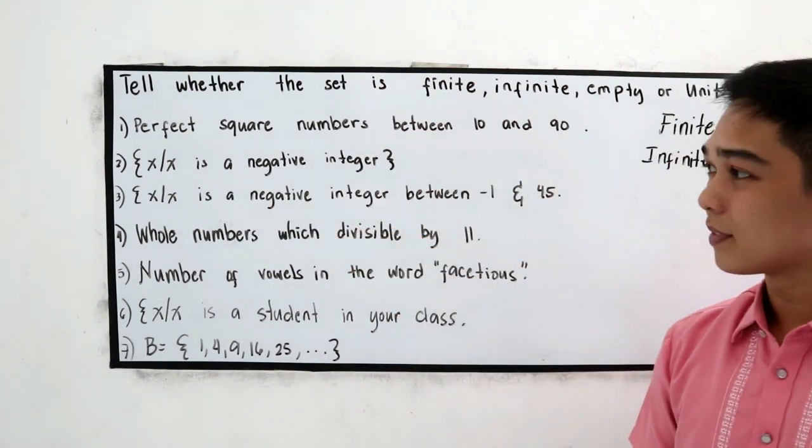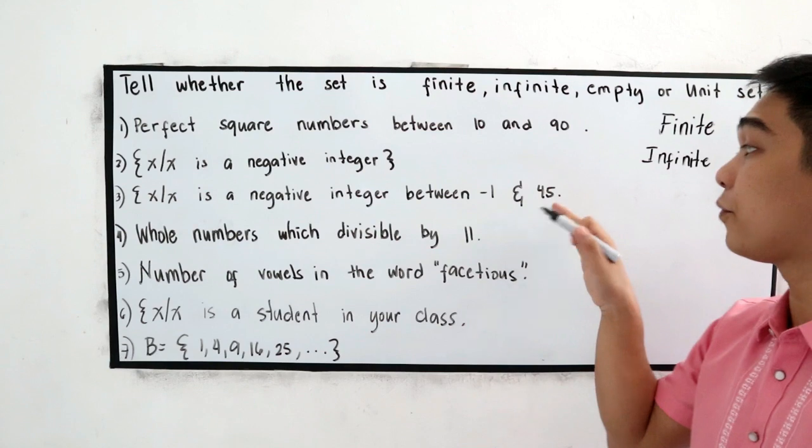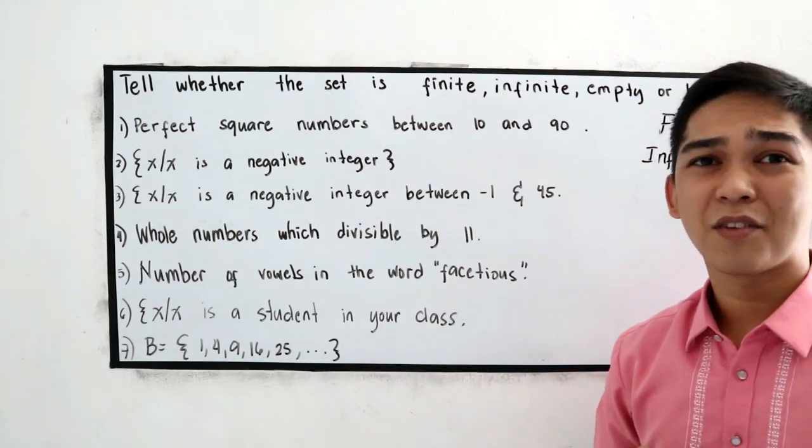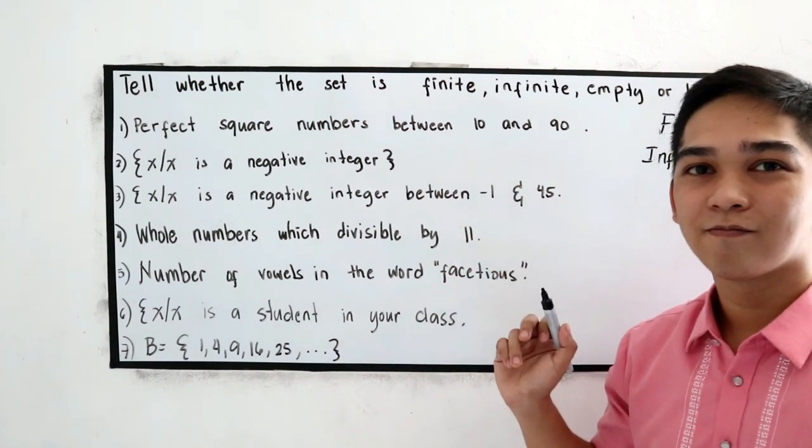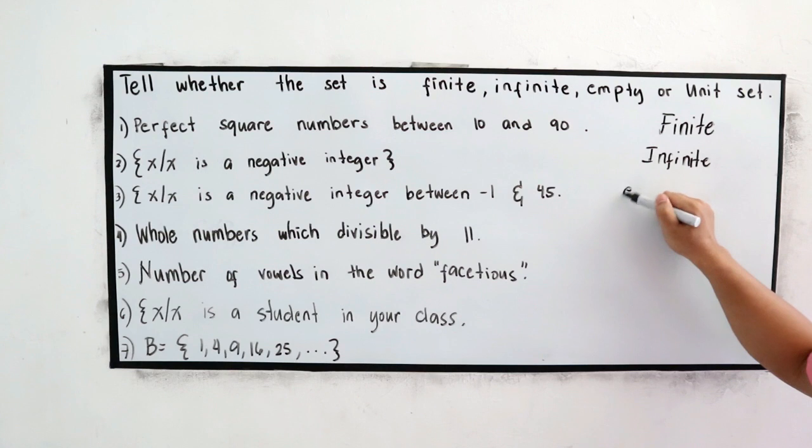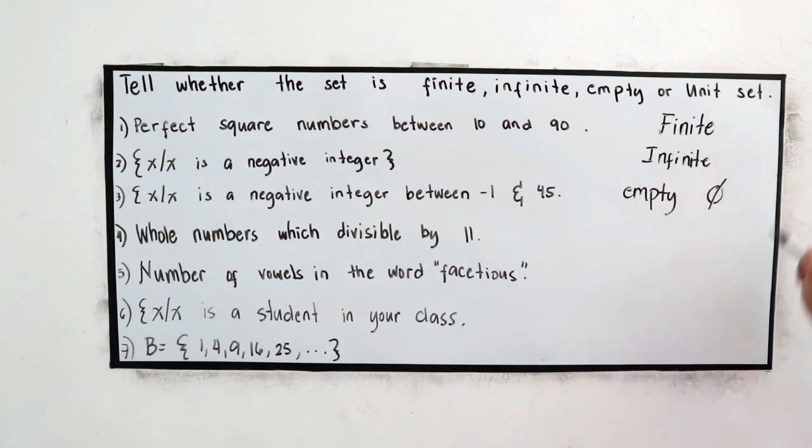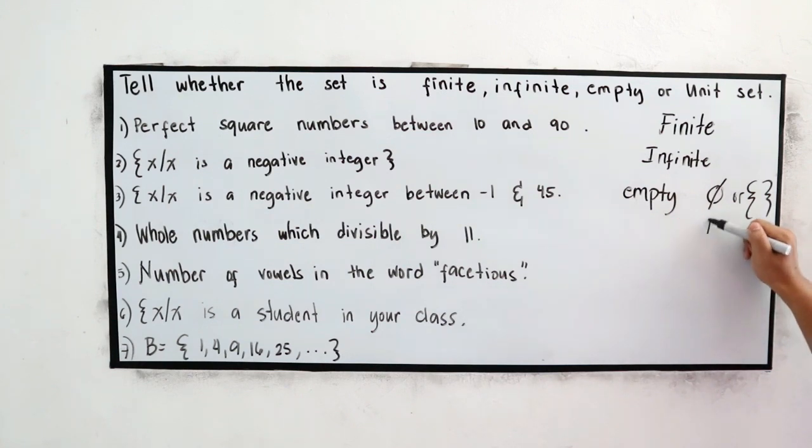Number three, x such that x is a negative integer between negative 1 and 45. Do we have a negative number between negative 1 and 45? None, so wala, so this is empty set or we can use this symbol. This is the empty symbol and this symbol also known as the null set, null set, or the empty set.